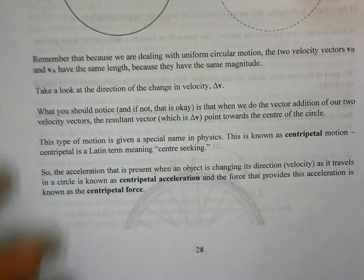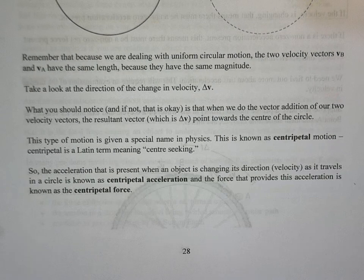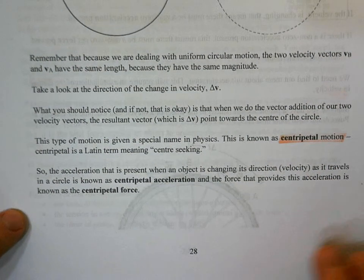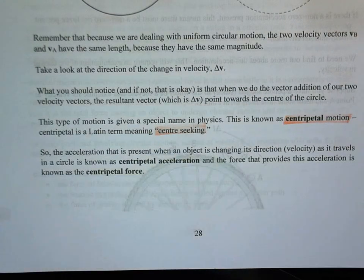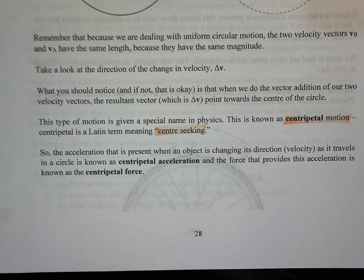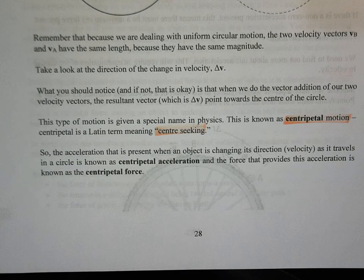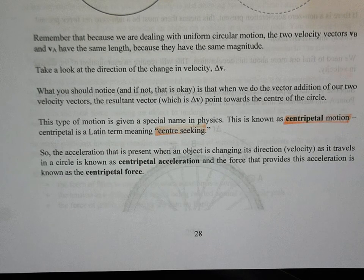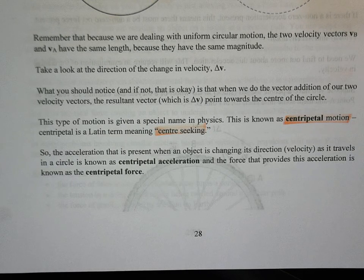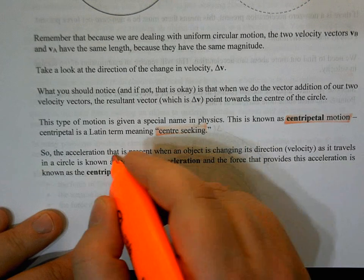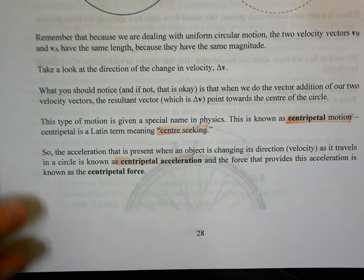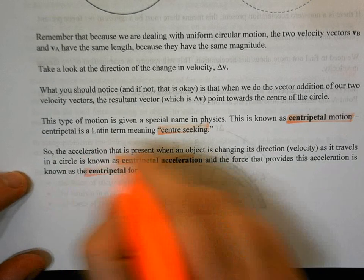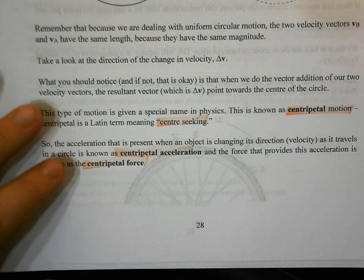This type of motion is referred to as centripetal motion. Centripetal is a Latin word meaning center-seeking. The acceleration seeks out the center of the circle. Because the change in velocity is directed towards the center, our acceleration is directed towards the center, and our net force is also directed towards the center. This special acceleration is called centripetal acceleration, and the net force directed toward the center is called centripetal force.